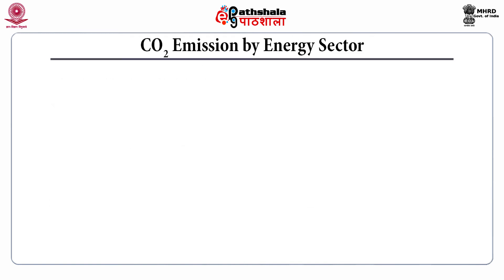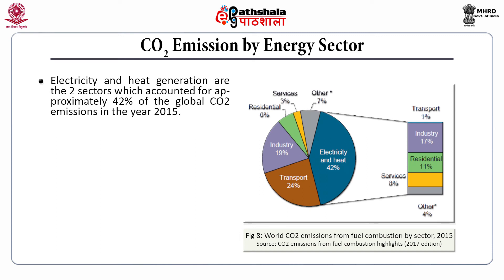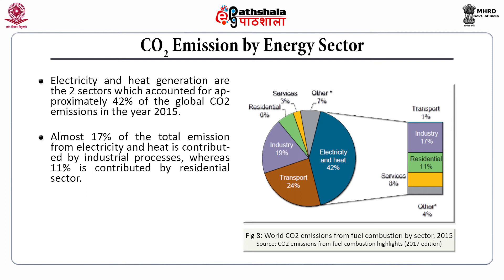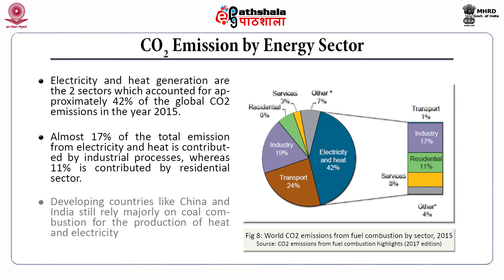Now, carbon dioxide emission by the energy sector. Electricity and heat generation are the two sectors that accounted for approximately 42% of global carbon dioxide emission in 2015. Almost 17% of total emissions from electricity and heat is contributed by industrial processes, whereas 11% is contributed by the residential sector. Even though there is an increase in the proportion of renewable energy sources for heat and electricity production, coal still remains the dominant source for electricity production. Developing countries like China and India still rely majorly on coal combustion for the production of heat and electricity.